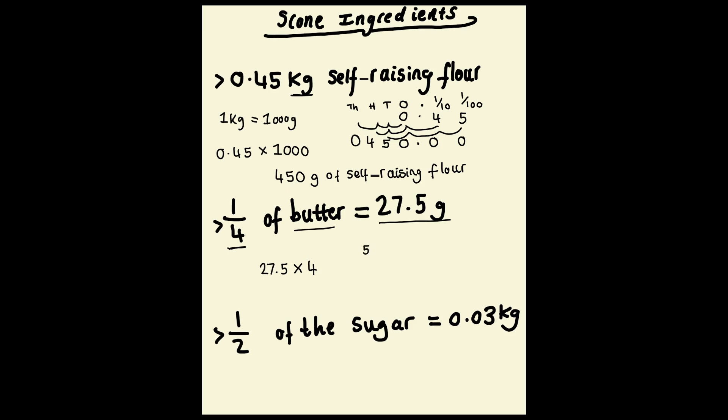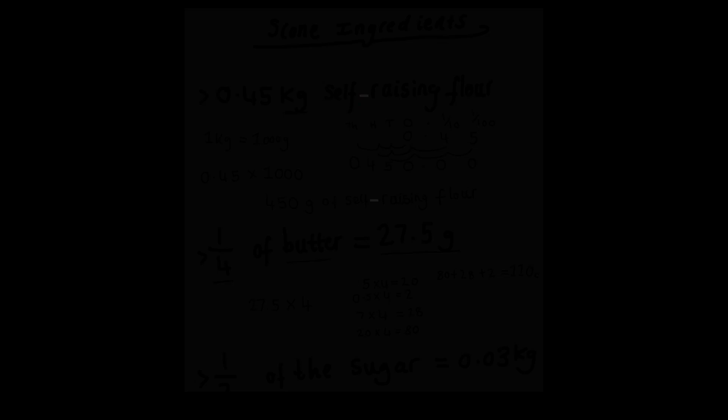I know that 5 times 4 is 20, and the 0.5 is 10 times less, then 0.5 times 4 is equal to 2, which is 10 times less than 20. I'm then going to do 7 times 4, which I know is equal to 28, then I'm going to do 20 times 4 which is equal to 80. 80 plus 28 plus 2, or 80 plus 30, is 110. So we need 110 grams of butter.